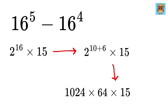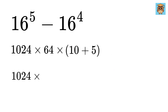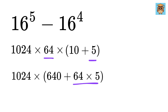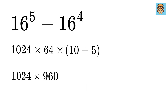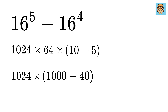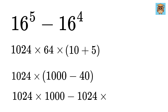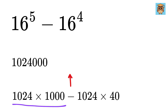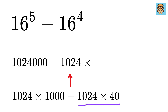Now write 1024 times 64, and write 15 as 10 plus 5. This will become 640 plus 64 times 5, or 320, giving us 960. So 1024 times 960, which can be written as 1024 times 1000 minus 1024 times 40. This is the same as 1,024,000 minus 1024 times 4 times 10.